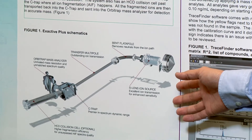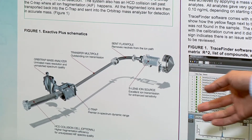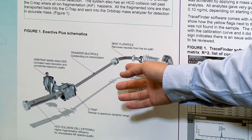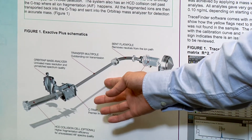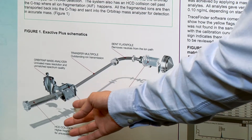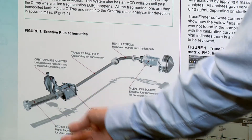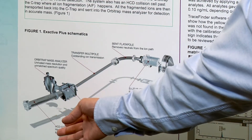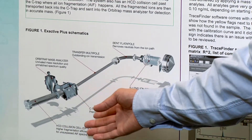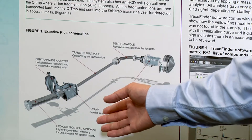From the diagram you can see the X-Activ Plus, where we have the S lens, and then the ion goes through the bent flatapole, then through a transfer ion optic, and then into the C-trap, and then into the Orbitrap. We have an HCD cell behind the C-trap where all the ions are fragmented and then transferred back into the C-trap and into the Orbitrap.